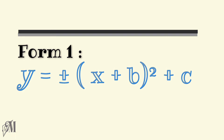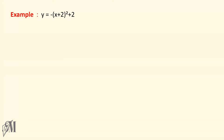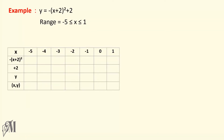The first form is y equals plus or minus (x plus b) squared plus c. Look at this example: y equals minus (x plus 2) squared plus 2, where the range of x is greater than or equal to minus 5 and less than or equal to 1. Let's make a table to find out the coordinates.